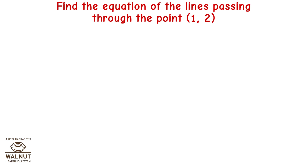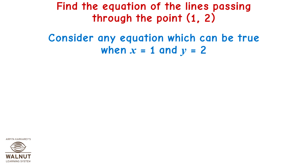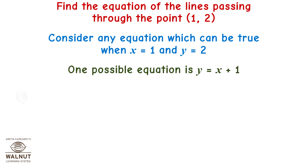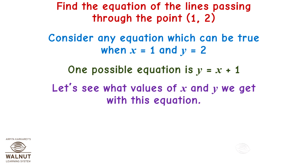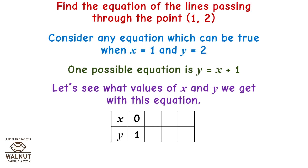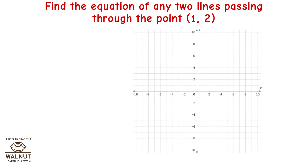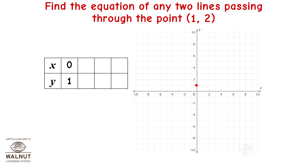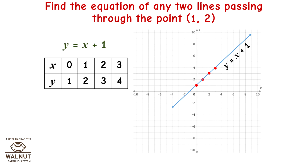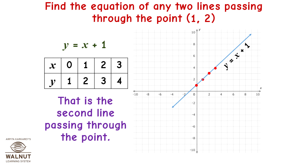Find the equation of the lines passing through the point (1, 2). Consider any equation which can be true when x = 1 and y = 2. One possible equation is y = x + 1. Points on this line: (0, 1), (1, 2), (2, 3), (3, 4). Let's plot these points and draw a line through them. That gives us the equation y = x + 1, the second line passing through the point (1, 2).